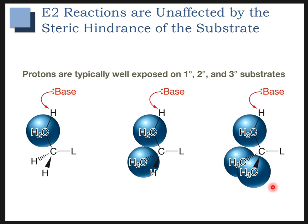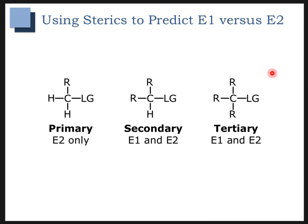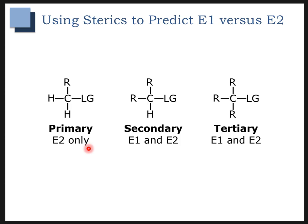E1 is going to be very similar to SN1 — it also goes through a carbocation intermediate, so it is stabilized by a tertiary substrate. Using sterics to predict E1 vs. E2: tertiary and secondary substrates can undergo both E1 and E2 reactions. Primary substrates can do E2 eliminations only, because if the leaving group falls off in an E1 mechanism, you'd form a primary carbocation, which is unstable. So if you have a primary substrate, E2 only.